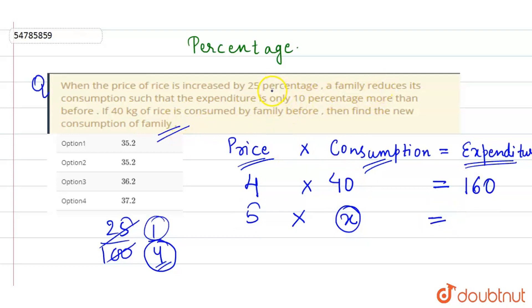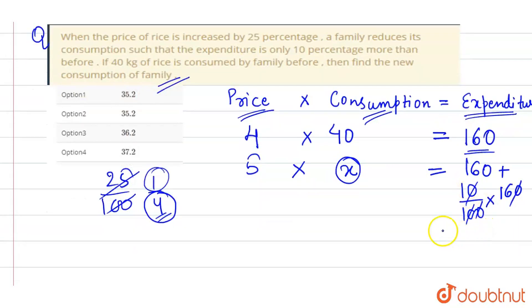When there's a 25% increase, the family reduces its consumption such that expenditure is only 10% more than before. That means the expenditure plus 10% increase, which is 10 by 100 of 160. That means 160 plus 16.